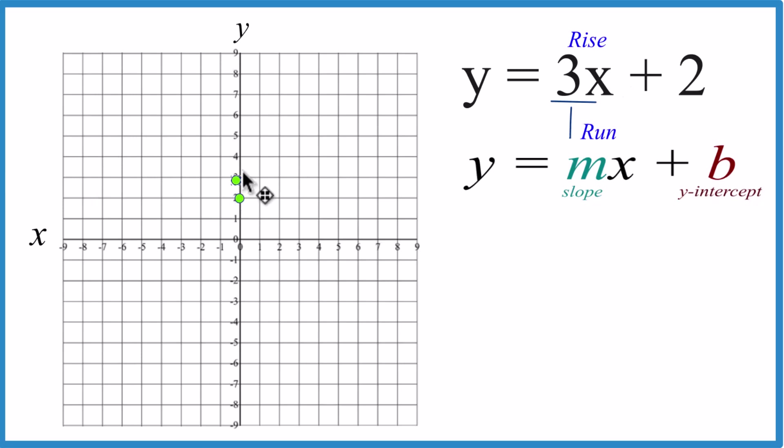You go rise 1, 2, 3, you run 1. From there, you go rise 1, 2, 3, and you run 1, and you can see you've got your line there for y equals 3x plus 2.